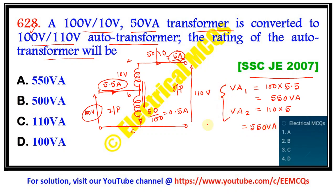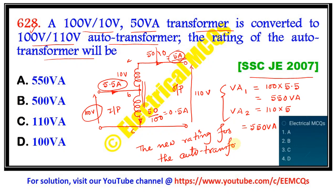So the new rating for the auto transformer is 550 volt ampere. Option A is the correct answer. I think all of you have understood. If you like the question and the explanation, kindly subscribe to the channel. Thank you.